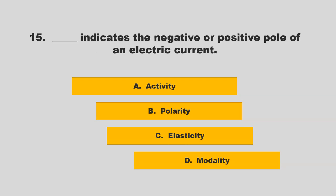Blank indicates the negative or positive pole of an electric current. Is it activity, polarity, elasticity, or modality? If you chose B, polarity, you are correct.